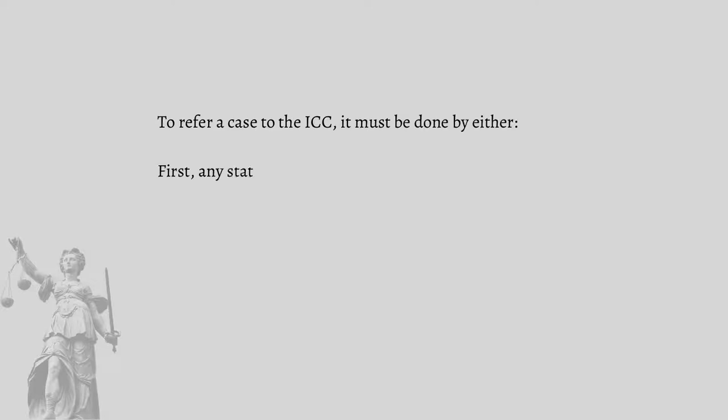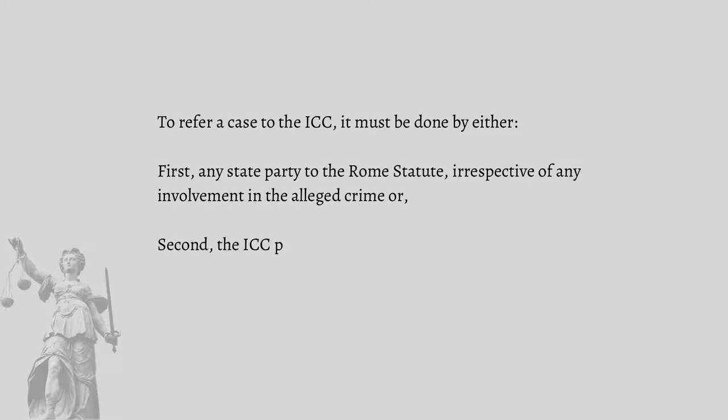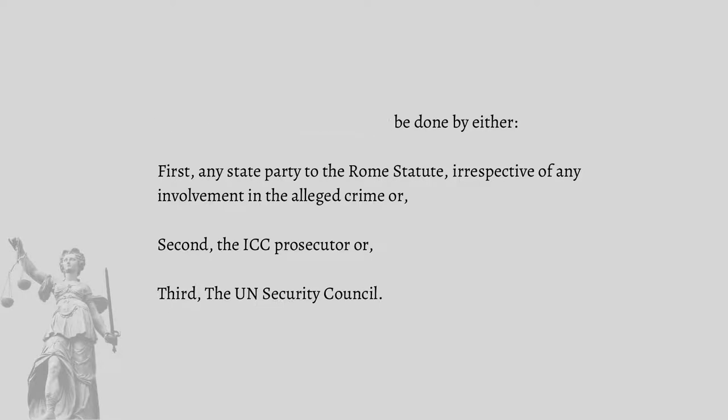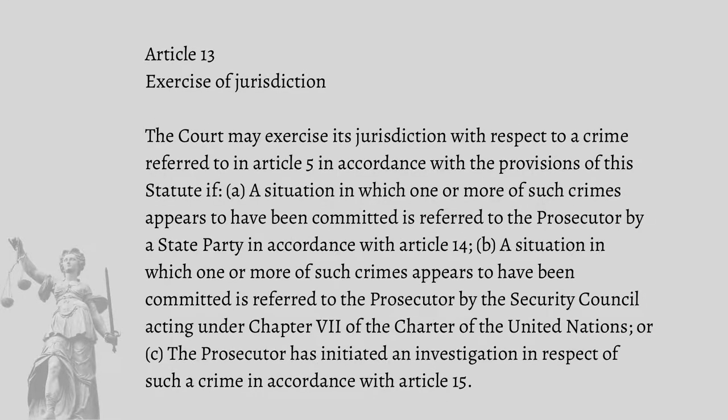Lastly, under Articles 13 to 16, to refer a case to the ICC, it must be done by either: first, any state party to the Rome Statute irrespective of any involvement in the alleged crime; or second, the ICC prosecutor; or third, the United Nations Security Council. Article 13 reads: the court may exercise its jurisdiction with respect to a crime referred to in Article 5 if: first, a situation in which one or more of such crimes appears to have been committed is referred to the prosecutor by a state party in accordance with Article 14; or second, a situation is referred to the prosecutor by the Security Council acting under Chapter 7 of the Charter of the United Nations; or third, the prosecutor has initiated an investigation in respect of such crime in accordance with Article 15.